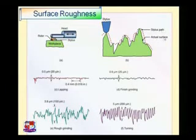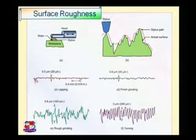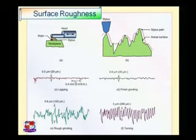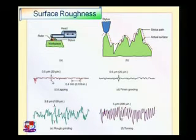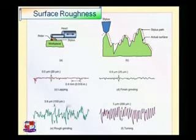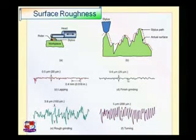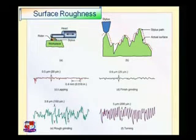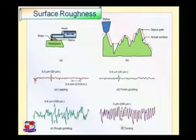There is a difference between the stylus path and the actual surface, and the instrument shows the path of the stylus. Here is an example: a sampling length of 0.4 millimeter is shown, within which the peak height is measured. In this case, one peak height is 0.5 micron and another is 0.6 micron — this is the Ra value. Surface C is achieved with lapping and D with finish grinding. Surface E has 3.5–3.8 microns done by rough grinding.